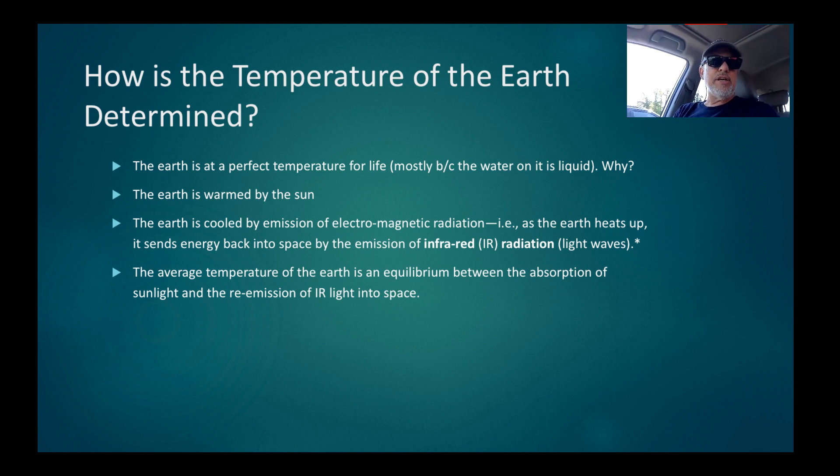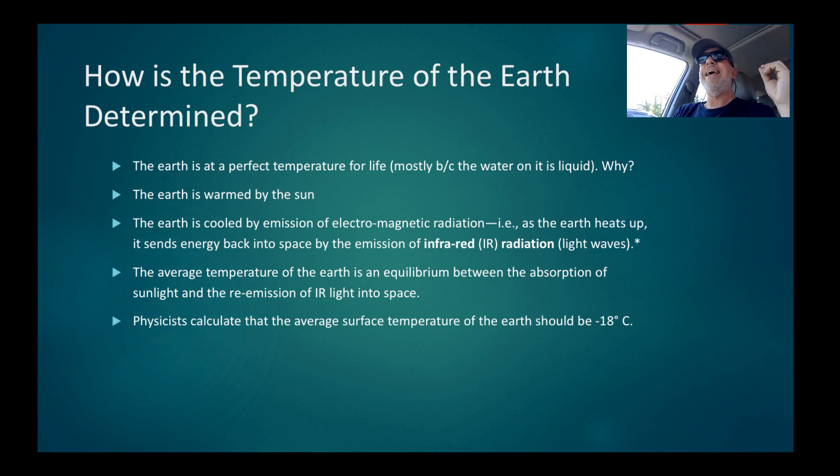The average temperature of the Earth is an equilibrium between the absorption of sunlight and the re-emission of infrared light back into space. Physicists can make that calculation easily. The first guy to do this was Joseph Fourier. Those of you who are in BC calculus will learn about Fourier series. He figured out that average surface temperature of the Earth should be minus 18 degrees centigrade. That's way below the freezing point of water.